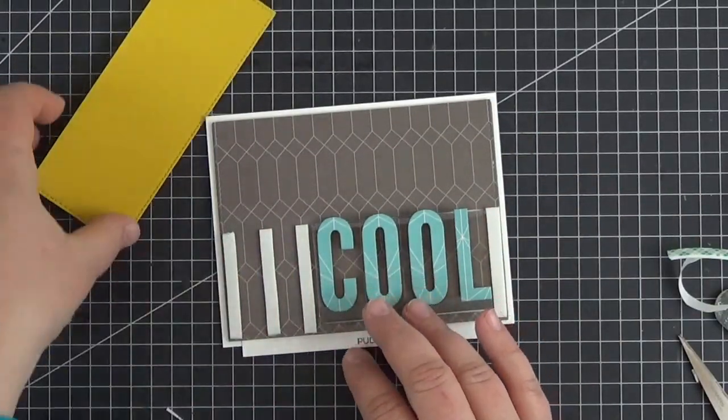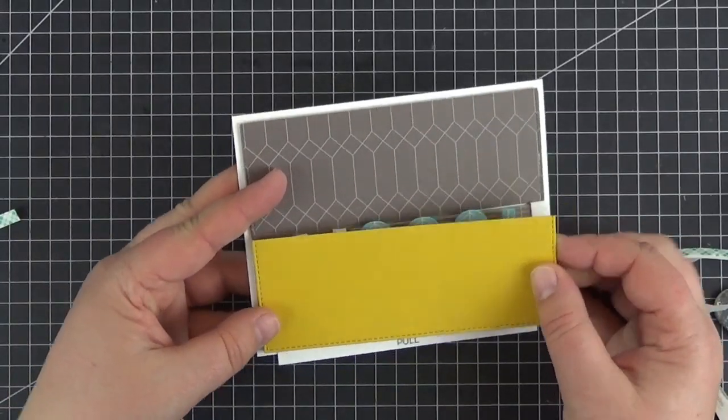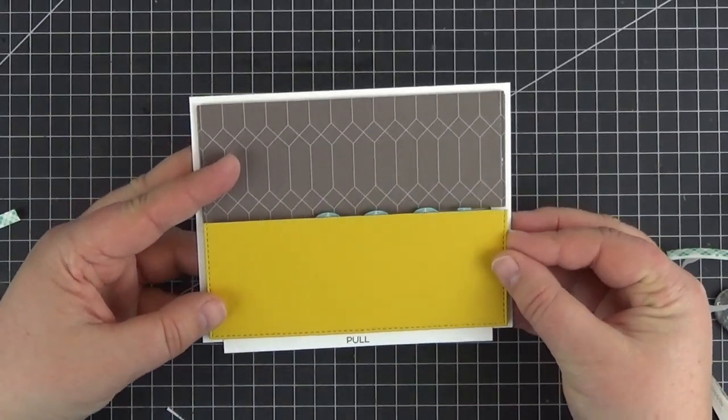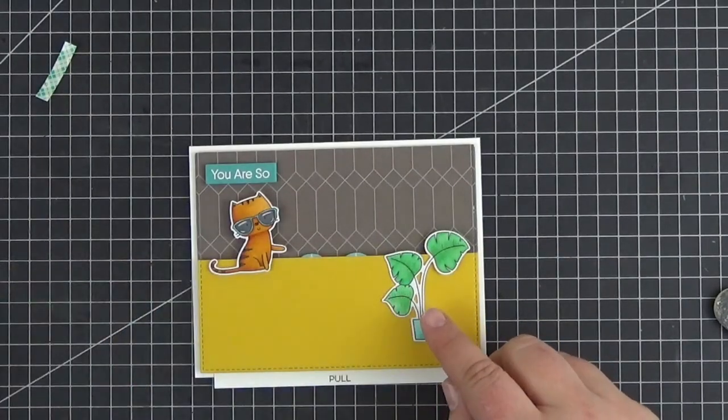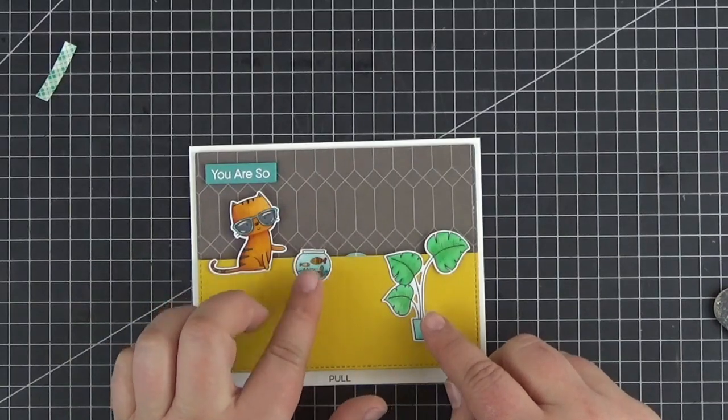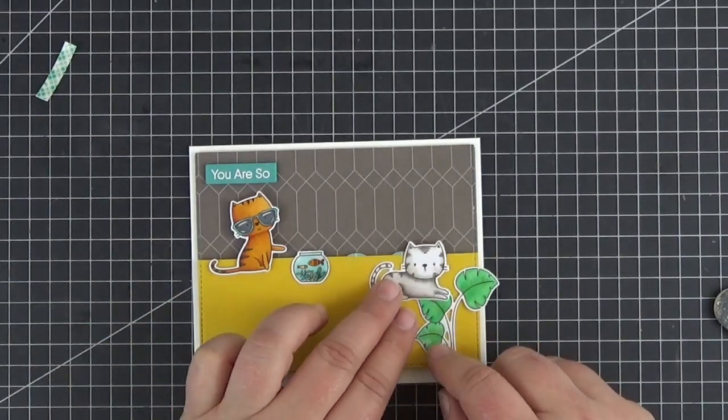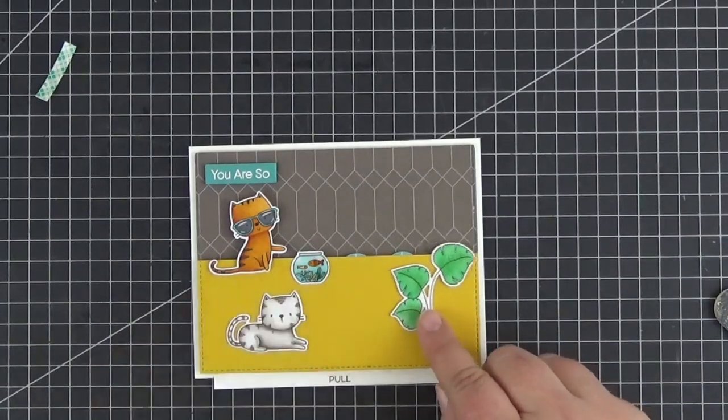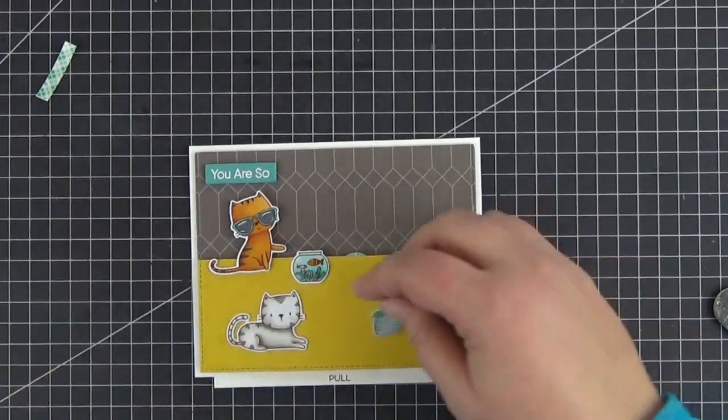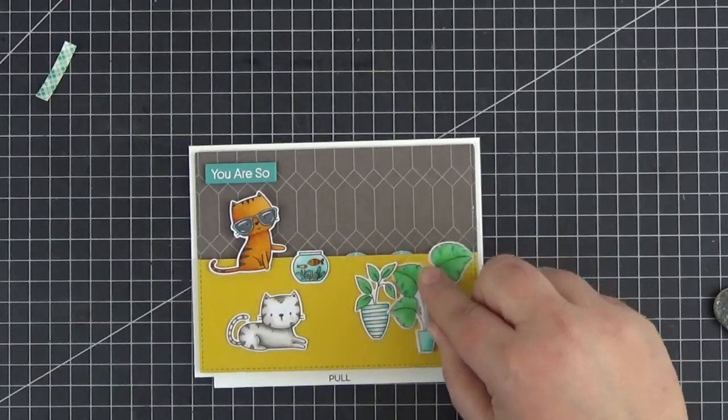After that, we're ready to decorate the card and that's about it. I have a bunch of leftover die cuts from recent projects, so I'll just use those. They're made with the Cat and Plant Purchase Dynamics and the House Cat stamps and dies. As always, you'll find a list of the Copic markers that I used in the description box below.